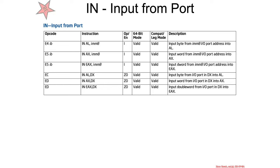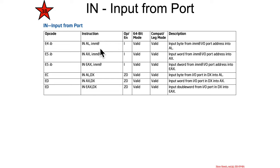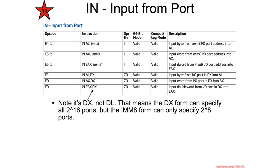Here's the IN assembly instruction, which is restricted most of the time to ring 0. There are two forms: one takes an immediate 8-bit value for the port to read from, and can read a byte, two bytes, or four bytes. The other form uses DX to specify the port, and again can read a byte, two bytes, or four bytes.